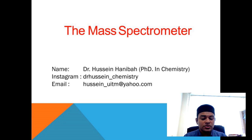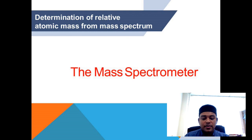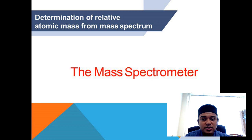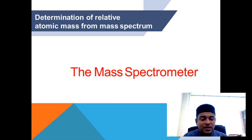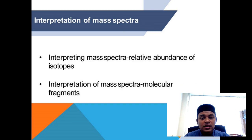Let's look at what we are going to learn. The subtopics include: how to determine the relative atomic mass from the mass spectrum. A spectrum is a line graph that we use to interpret data, so we will be interpreting the mass spectra.